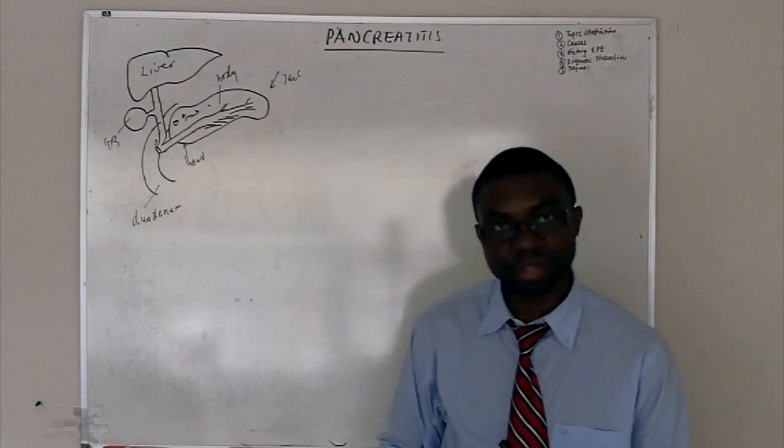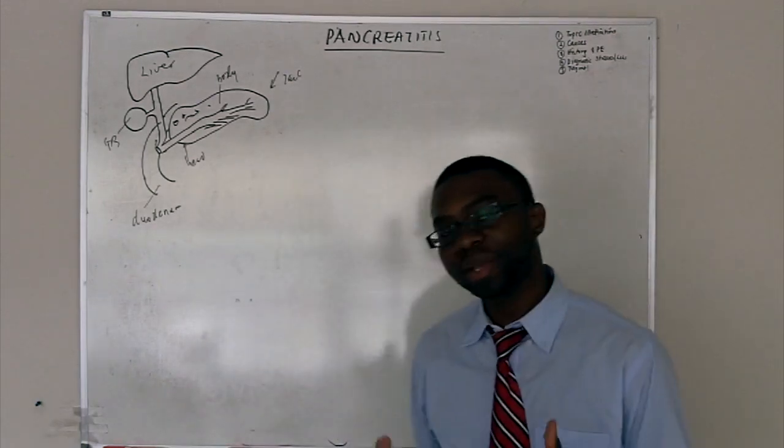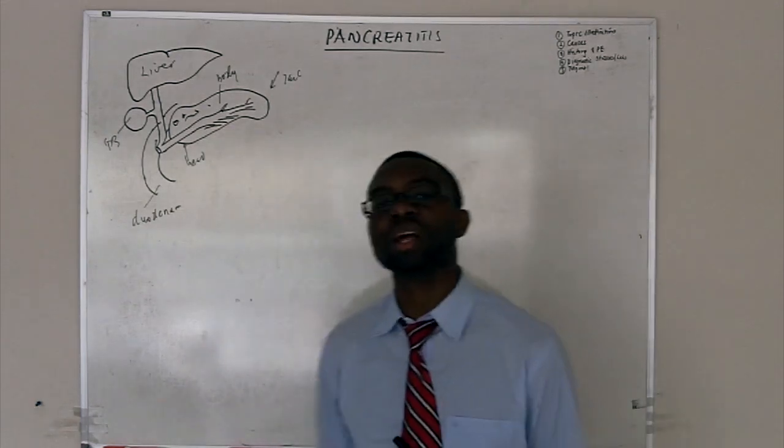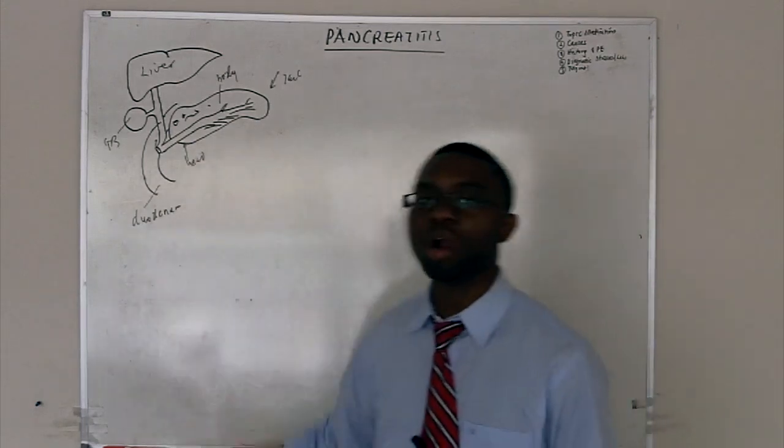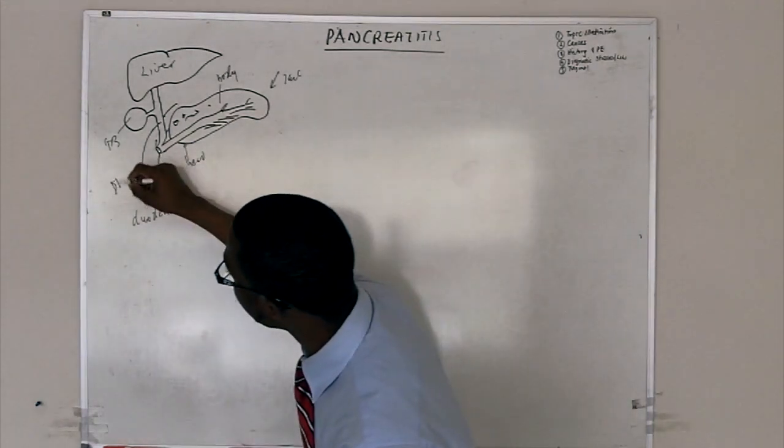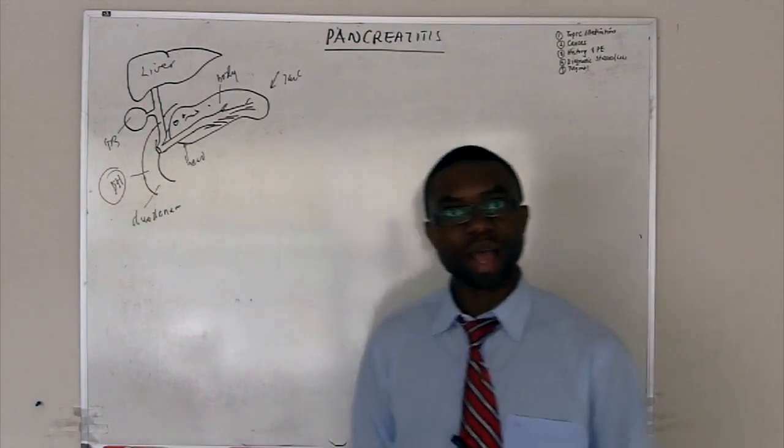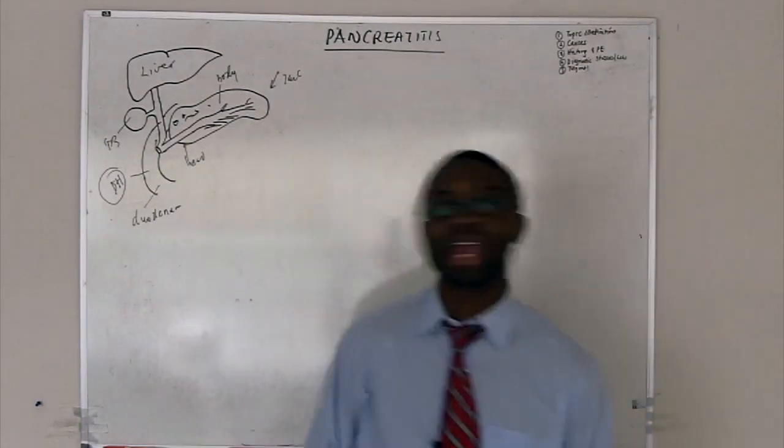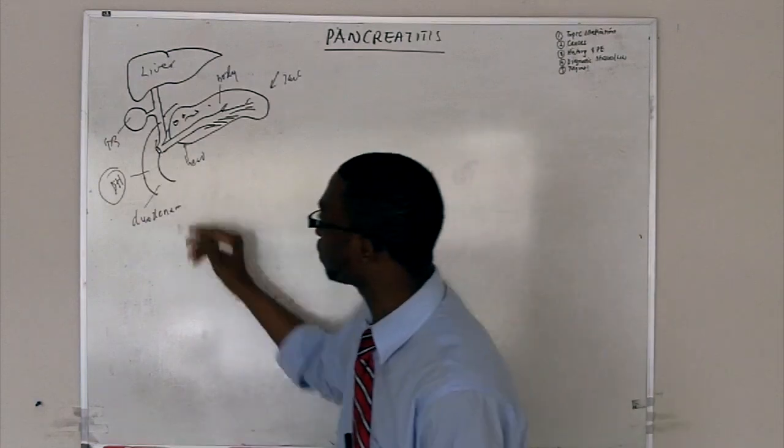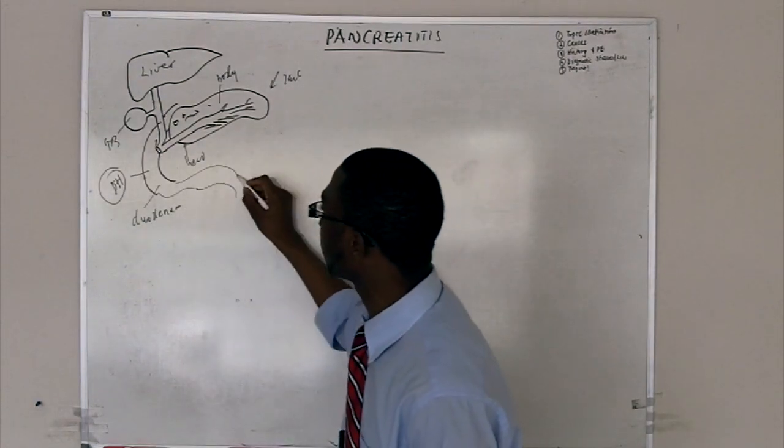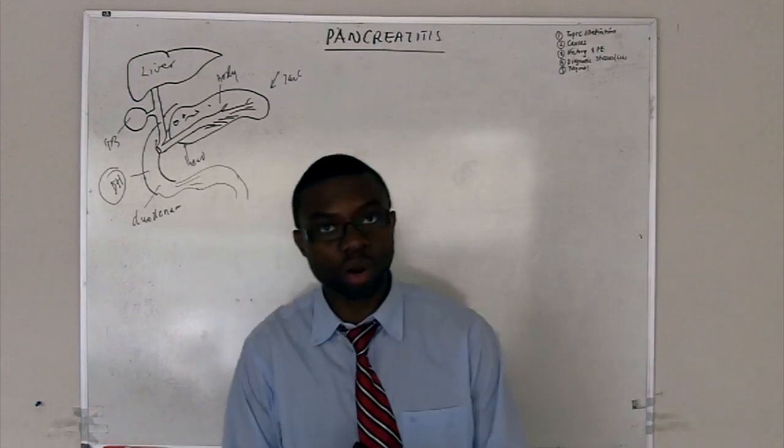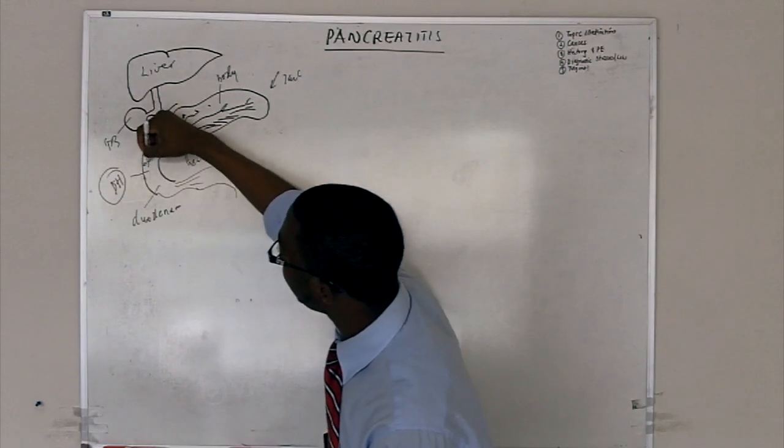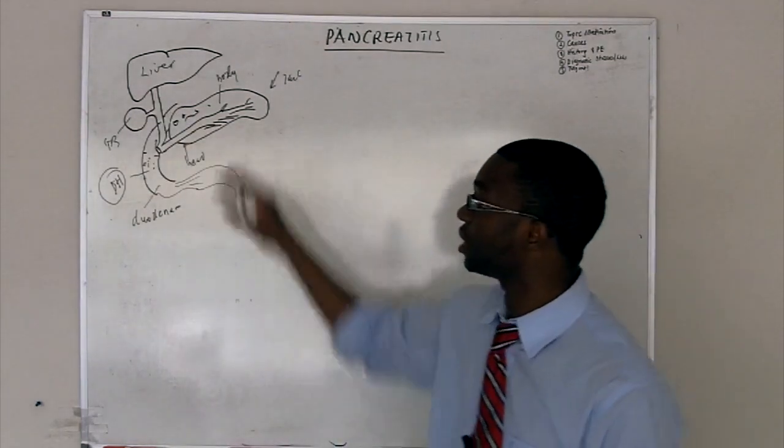But we are more concerned about the pancreas. Understanding the basic physiology of the pancreas will allow you to understand how it works. The pancreas does a lot of good stuff. It makes bicarbonate because we need to keep the pH inside the duodenum alkaline. Why? Because we're dumping a lot of acids coming from the stomach.